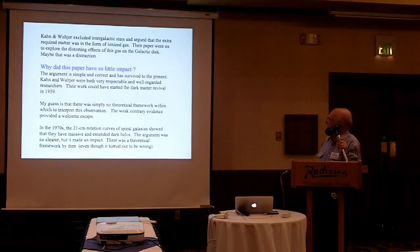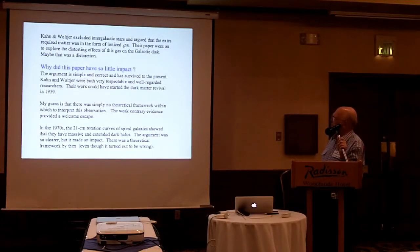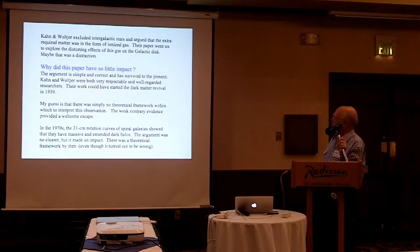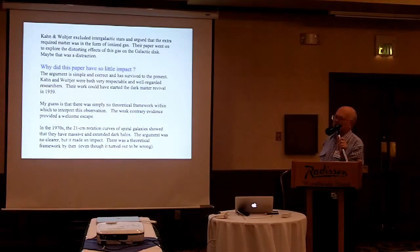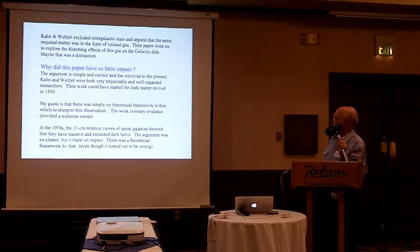Kahn and Woltjer excluded intergalactic stars and argued that the extra required mass was in the form of ionized gas, and their paper explored the effects this gas might have on the galactic disk. Maybe that was a distraction from the real impact of their paper. There was a huge amount of unaccounted-for matter. Why did the paper have so little impact? The argument is simple, correct, and survives to the present. They were both very respectable and well-regarded researchers. My guess is that there was simply no theoretical framework within which to interpret this observation, and weak contrary evidence provided a welcome escape from an uncomfortable situation.